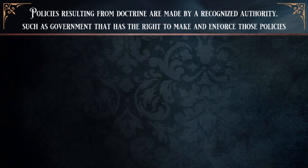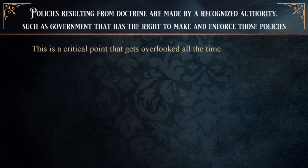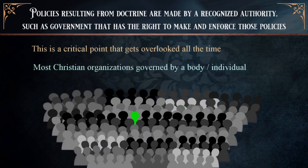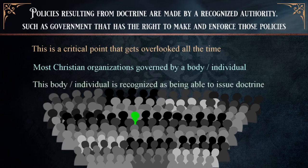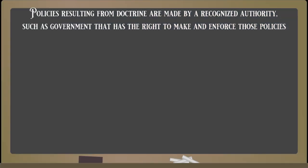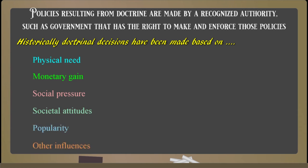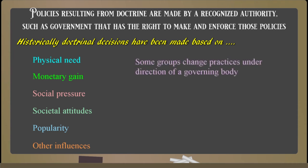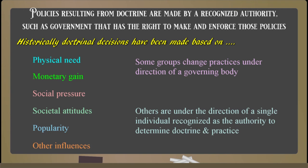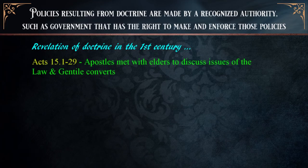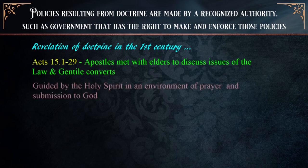Policies resulting from doctrine are made by a recognized authority that has the right to make and enforce those policies. Most Christian denominations are governed by a council, senate, or other leader recognized as having the ability to determine what a group's beliefs and practices are. Historically, doctrinal decisions have been made based on physical need, monetary gain, social pressure, societal attitudes, and popularity — things that have nothing to do with what the Bible teaches. Some groups change practices based on a governing body's opinions; others follow a single individual recognized as being able to determine doctrine.